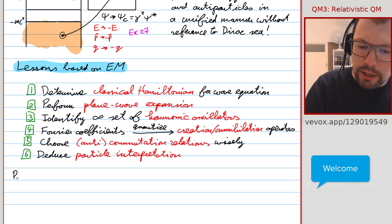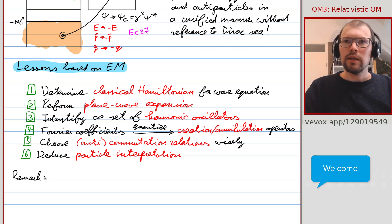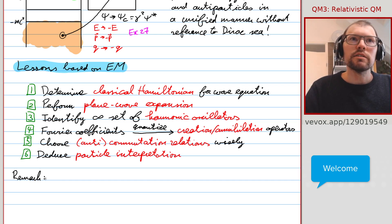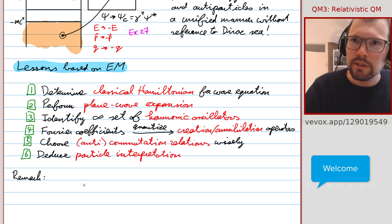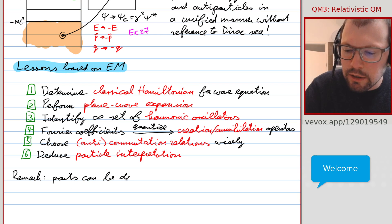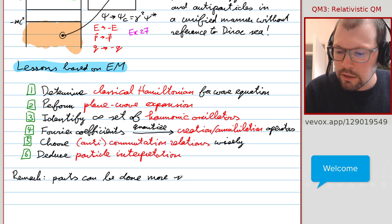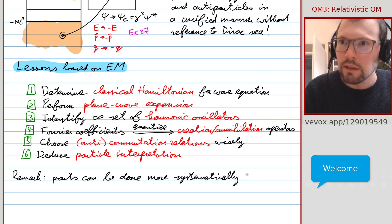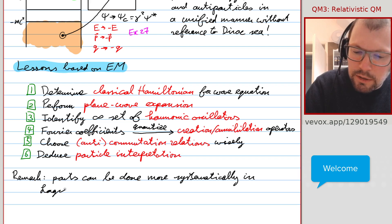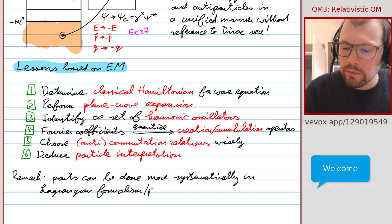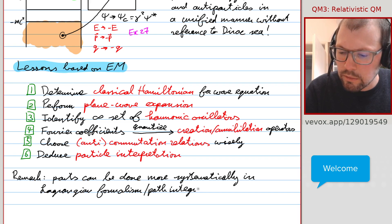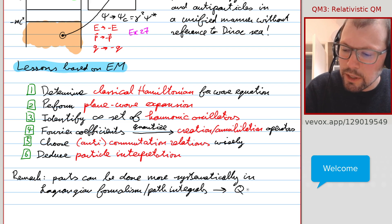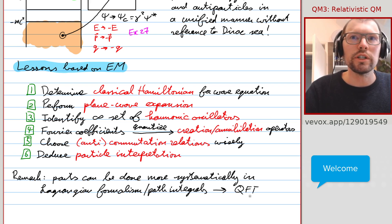A small remark: here we're purely looking at things from a Hamiltonian perspective. Later, you will learn that it can be more systematic to view this from a Lagrangian perspective, starting from an action. Parts of this can be done more systematically in the Lagrangian formalism, and especially using path integrals. You will encounter this in quantum field theory courses.